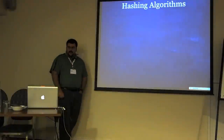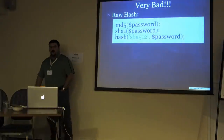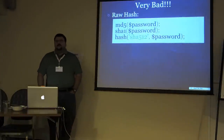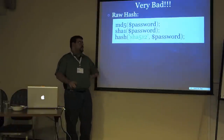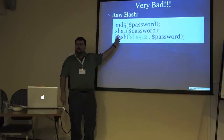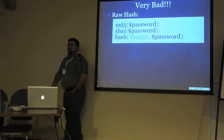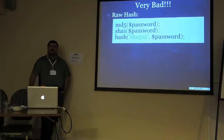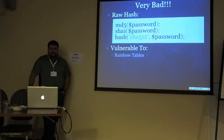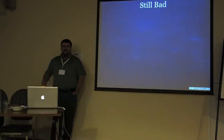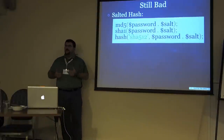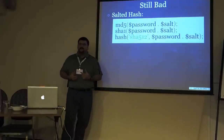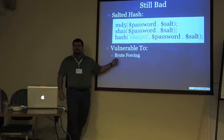Let's talk about hashing algorithms. Very bad: anything that uses a raw password. MD5 is not broken for password storage — MD5 has the same strength as SHA-1 and is negligibly weaker than SHA-512. But all three are equally weak when it comes to brute forcing and rainbow tables. Still bad is adding a salt — all three algorithms are incredibly fast. They're designed for things like signatures where you're processing lots of data and they have to be fast. That's exactly why they're vulnerable to brute forcing.